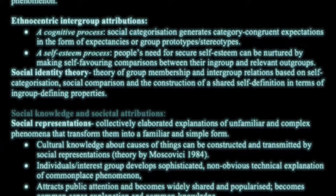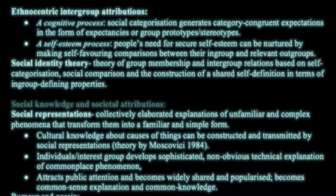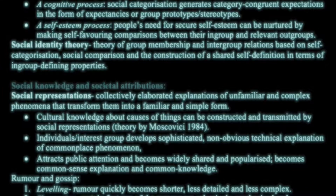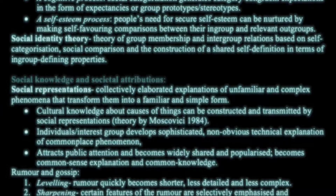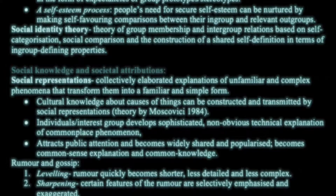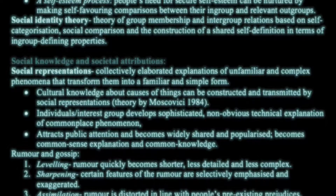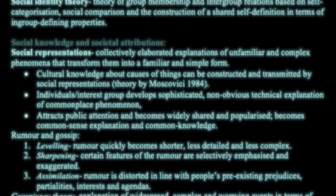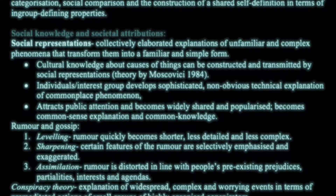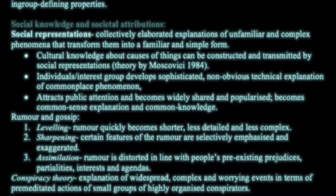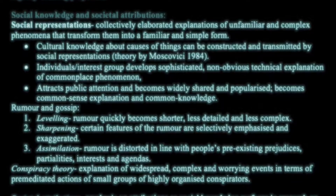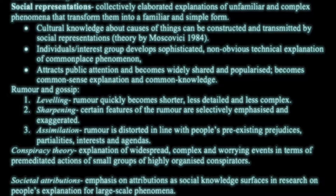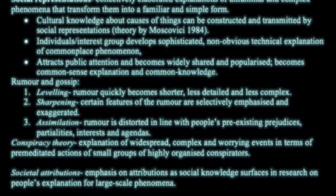Social identity theory, previously mentioned, is the theory of group membership and intergroup relations based on self-categorization, social comparison, and social construction. Social representations are collectively elaborated explanations of unfamiliar and complex phenomena that transform them into familiar things — a model by Moscovici in 1984. Regarding rumors: leveling is where rumors spread quickly, sharpening is where certain features are heard selectively, and assimilation is where a rumor is distorted in line with pre-existing prejudices. Conspiracy theories are explanations of widespread, complex, and worrying events in terms of premeditated actions of small groups of highly organized conspirators.